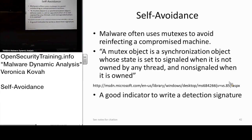At a high level, a mutex is used program-wide for synchronization. If a piece of an application uses the same resource, it's a kind of flag saying 'hey, I'm using this, don't use it.' So it's normally used for synchronization purposes. However, malware also often uses a mutex in order to set a marker.